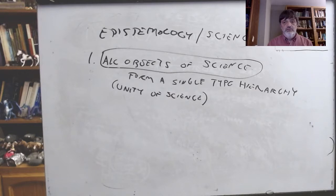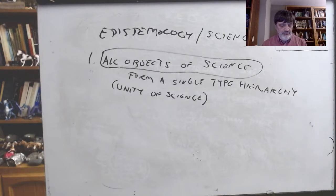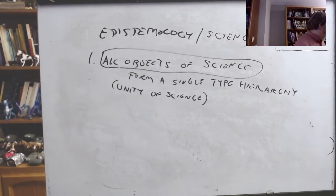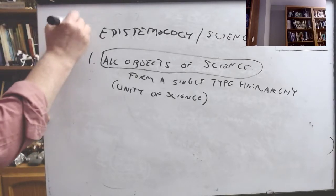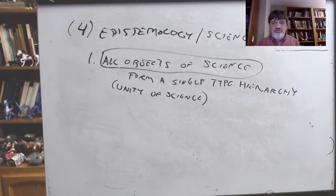I'm going to go back to what I was trying to get through at the end last time, and then after that I'll talk about the new material. What I had written up at the end last time is still here. This was point number four on my list of the four issues that Carnap was trying to solve at the same time.